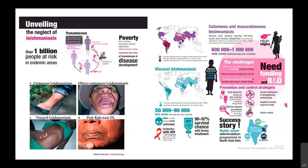Leishmaniasis is one of the vector-borne diseases and it's considered a neglected disease because it's associated mostly with poverty and malnutrition, so there's not a lot of investment from pharmaceutical companies. Leishmaniasis is endemic worldwide, with over one billion people at risk living in endemic areas. The cycle starts with infected female phlebotomine sand flies that transmit the metacyclic form of the parasite into the mammalian host, here represented as a human.